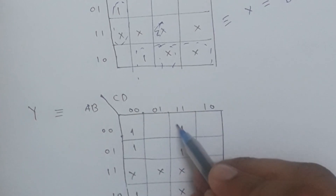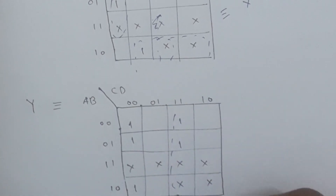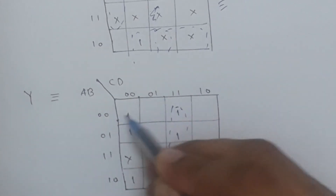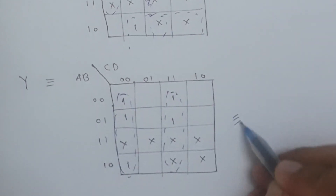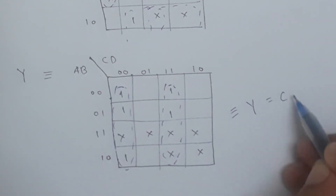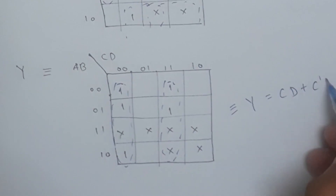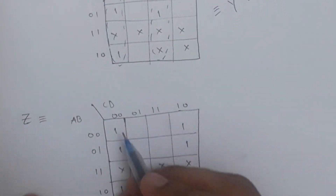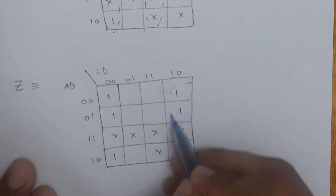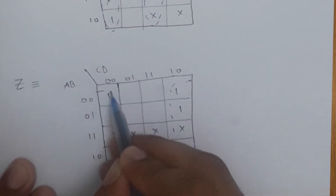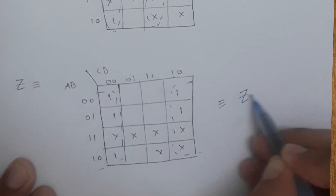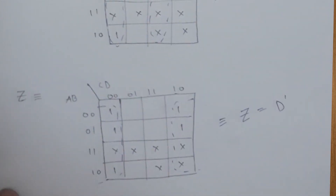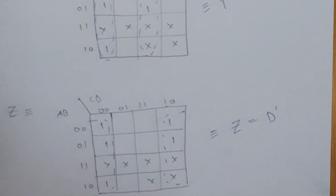For Y, we have two quadruples, and the minimized expression for Y is: CD + C'D'. For Z, we have an octet, and the minimized expression for Z is: D'.